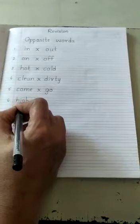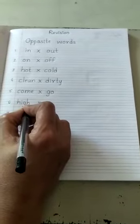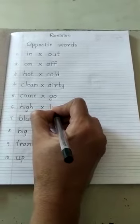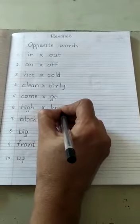Next one is H I G H. High. What is the opposite word for high? Low. L O W. Low.